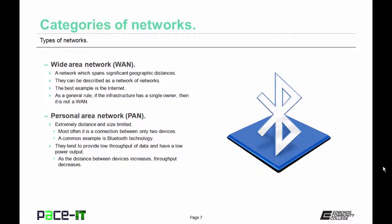Now let's move to the smallest category of network, the personal area network, the PAN. These are extremely distance and size limited. Most often it's a connection between only two devices. A common example is Bluetooth technology. Bluetooth uses a PAN to connect two devices together. They tend to provide low throughput of data and have low power output. As the distance between devices increases, throughput decreases.